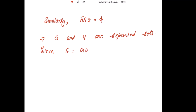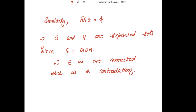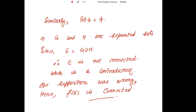Since E is the union of G and H, and G and H are separated sets, therefore E is not connected — which is a contradiction, because E is given to be connected. So our supposition was wrong. We had supposed that F of E is not connected. Hence, F of E is connected.